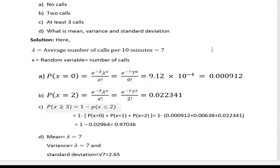For at least three calls, that means three or more calls up to infinity, it is easier to use the complement: 1 minus P(x ≤ 2). P(x ≤ 2) includes zero calls, one call, and two calls. We already calculated the value for zero; put x equals 1 to get the next value, and x equals 2 is already calculated. Summing all and subtracting from 1, we get 0.97036. So the probability of at least three calls is 0.97036.